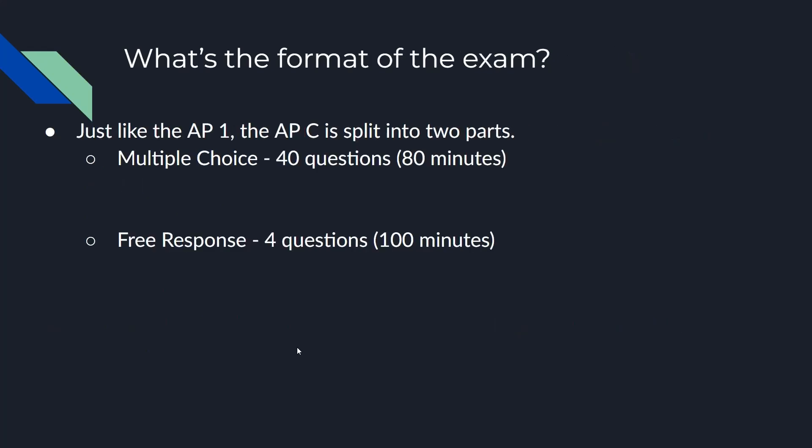Now the AP C exam is actually formatted exactly like AP 1. There's going to be 40 multiple choice questions, and you have about 80 minutes to complete this. This means you have about two minutes per question, which is pretty reasonable. Originally, it was 35 for 45 minutes, which was kind of insane, a little bit over a minute. This is going to make the exam much more manageable.